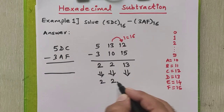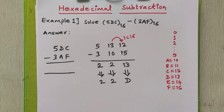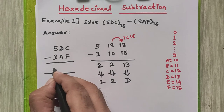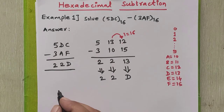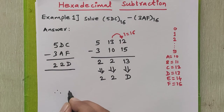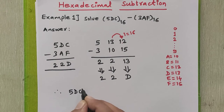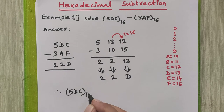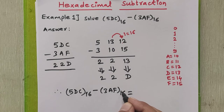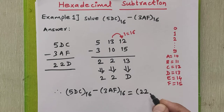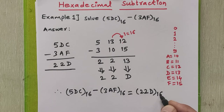The final answer is 2, 2, D. Therefore, 5DC base 16 minus 3AF base 16 is equal to 22D base 16.